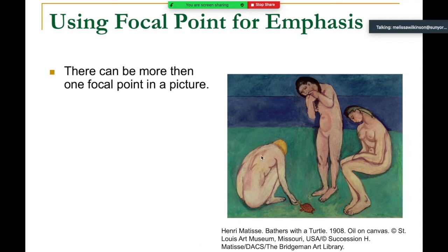In this Matisse image, we have three major components that are disparate from the background — disparate in temperature, color, value (they're lighter), and the fact that they are similar. Like elements attract the eye — that's a rule I walked out of school with and still use today. Like elements will pull the eye across the composition, so you move from one figure to the next.